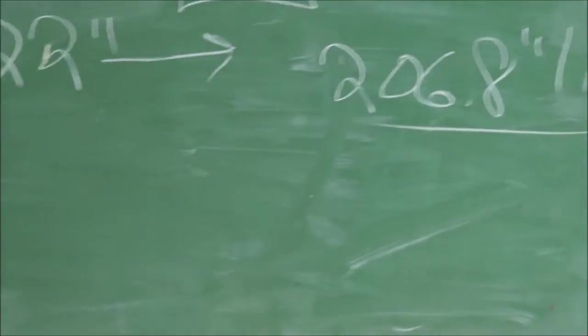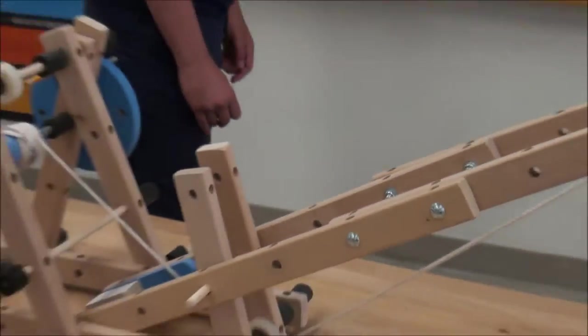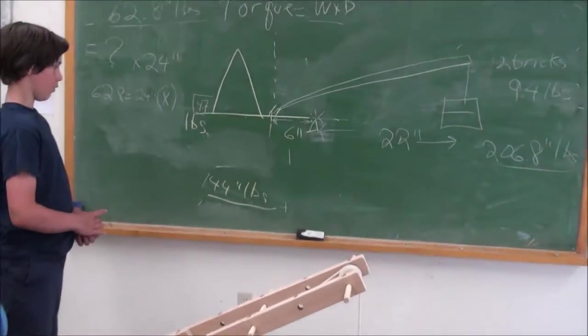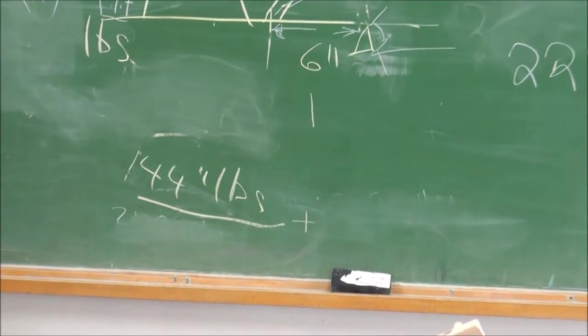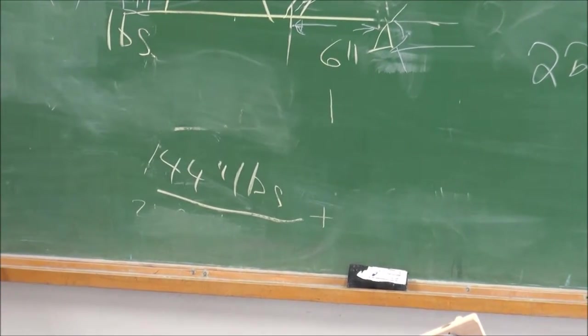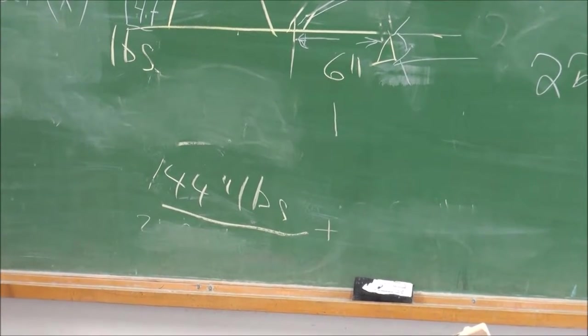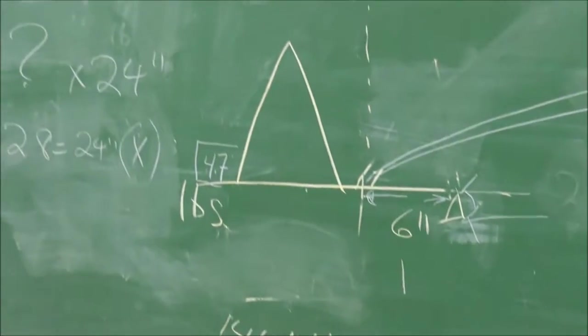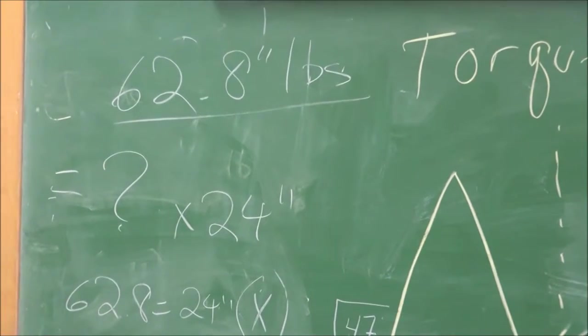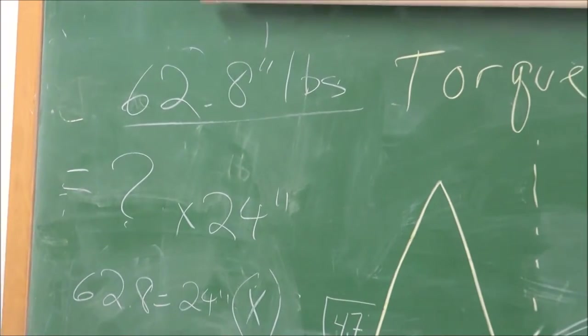Now the crane, we haven't done anything to the crane yet. So the crane is still 144 inch pounds. So 144 is not as big as 206, so it's going to tip. The difference between the 144 and the 206 is 62.8 inch pounds.